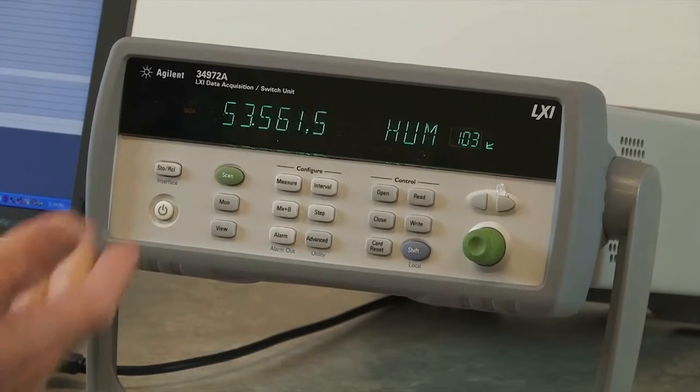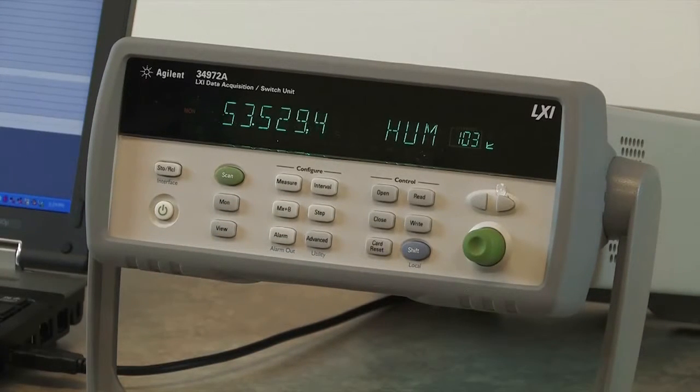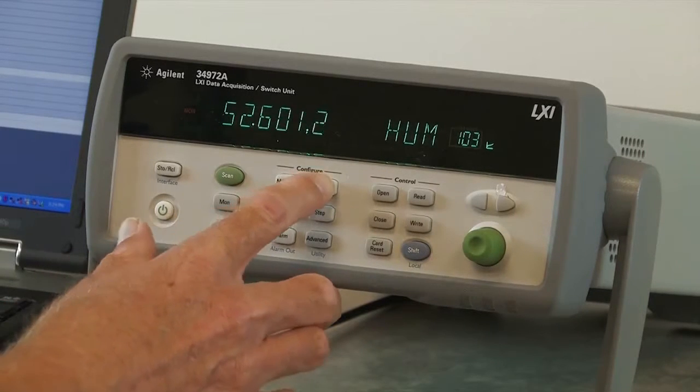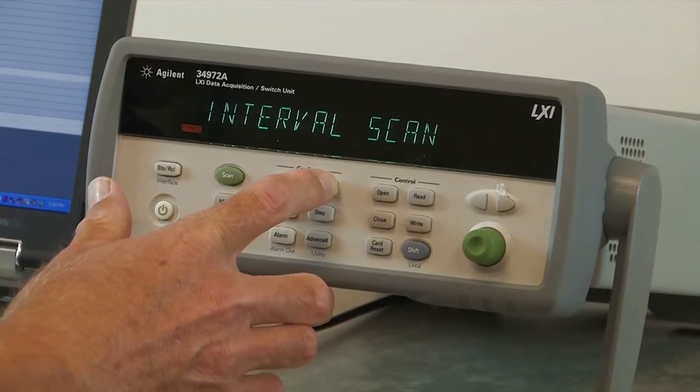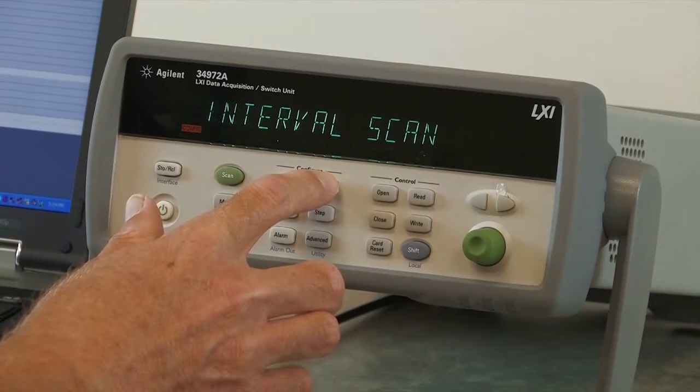So as you can see right now, we have 53.6 percent humidity in the room. That's an example I can set up from the front panel. We can also set up a scan. We first start off with setting the scan interval.